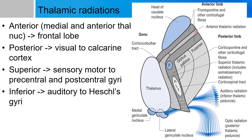The anterior thalamic radiation carries information from the anterior and medial nuclei to the prefrontal and frontal lobe. Posteriorly, as discussed in the pulvinar section, information from the visual pathway travels via a portion of the posterior limb of the internal capsule posteriorly into the occipital visual cortex.